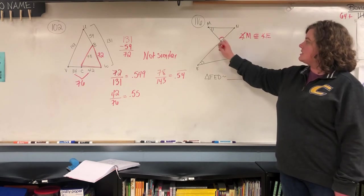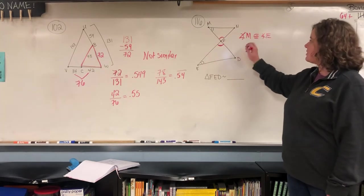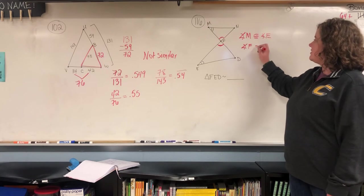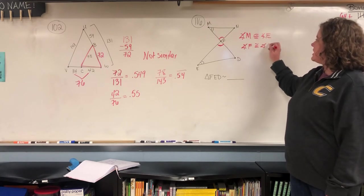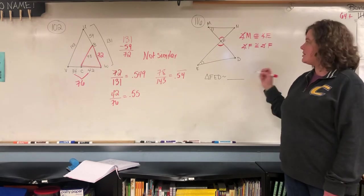And then these right here are the same because they're called vertical angles. So this is the same in both of them. So angle F is congruent to angle F. So there's two angles the same so that they are similar.